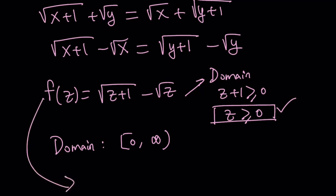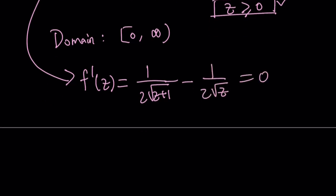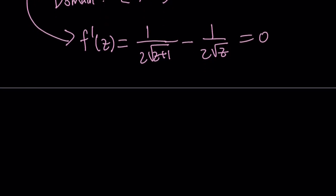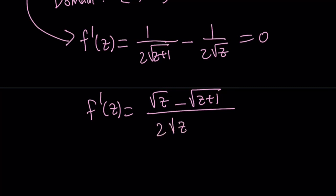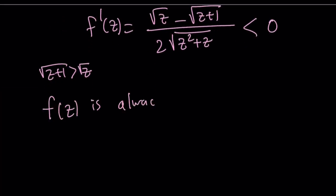Let's differentiate this function. The derivative is 1 over (2 times the square root of z+1) minus 1 over (2 times the square root of z). Making a common denominator, f′(z) equals [square root of z minus square root of (z+1)] divided by [2 times the square root of z² + z)], set equal to 0. There are no solutions because the square root of (z+1) is always greater than the square root of z. Therefore, this expression is always negative, meaning f(z) is always decreasing.